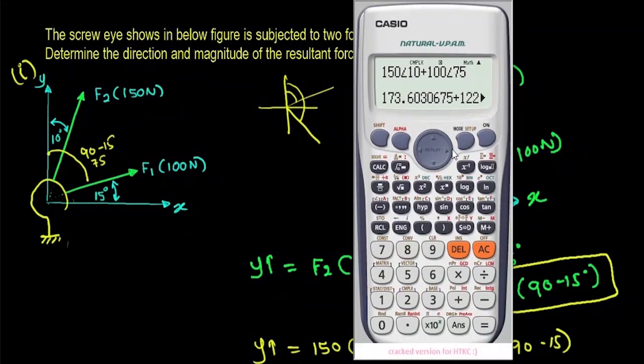You have got the answer in terms of complex form. That's why you can see the i here.